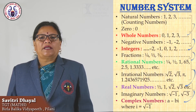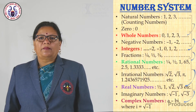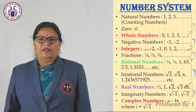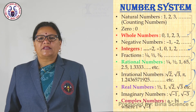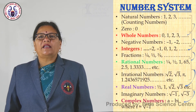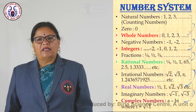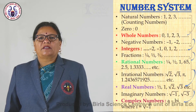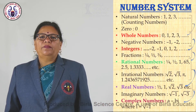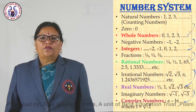The decimal representation of irrational numbers is non-terminating and non-repeating. Rational numbers and irrational numbers combine to give us real numbers. All real numbers can be represented on a number line. Real numbers and imaginary numbers finally form complex numbers, which completes our number system.